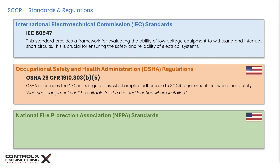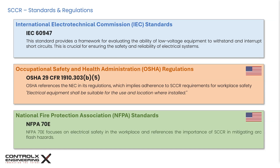The NFPA, or National Fire Protection Association, provides crucial guidelines for the safe design, installation, and operation of electrical control panels. These standards cover electrical safety, short circuit current ratings, wiring methods, grounding, and the selection of suitable components. In particular, NFPA 70E focuses on electrical safety in the workplace and references the importance of SCCR in mitigating arc flash hazards.